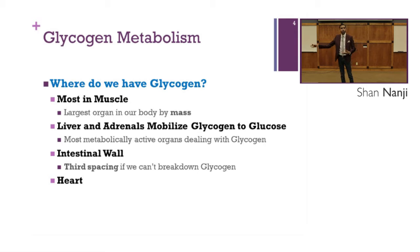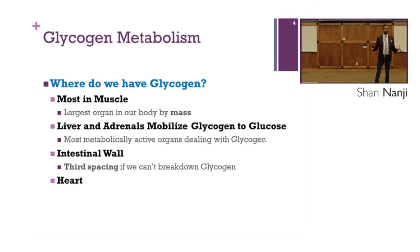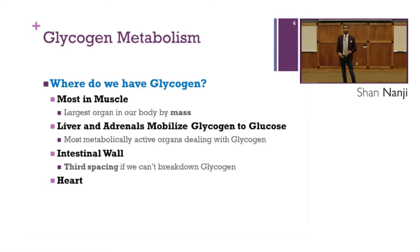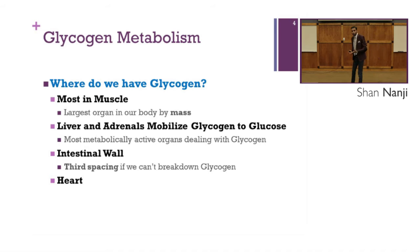The liver and adrenals mobilize glycogen to glucose and are the most metabolically active organs dealing with glycogen. The intestinal wall and heart also store glycogen. If we don't break down glycogen, we end up with what we call third spacing. Glycogen carries a lot of water, making these organs large, and even larger if we can't break that glycogen down.